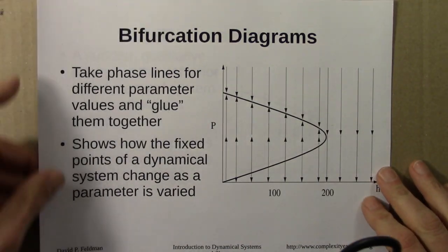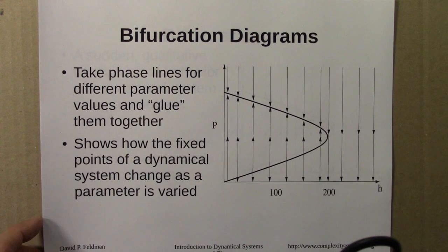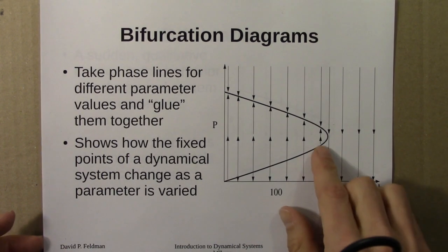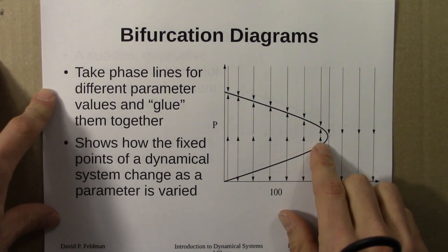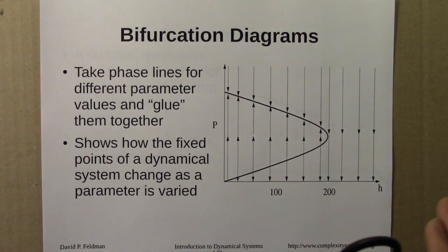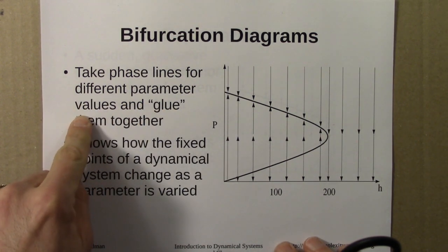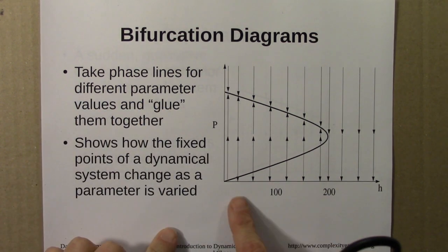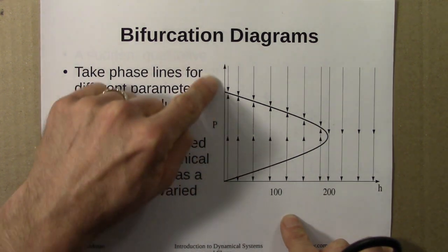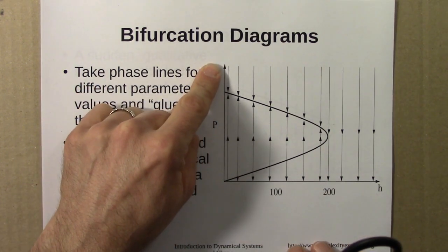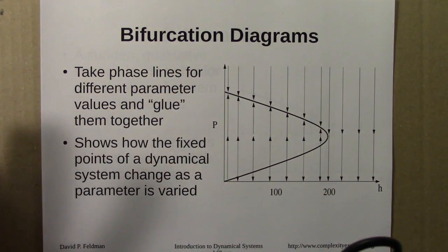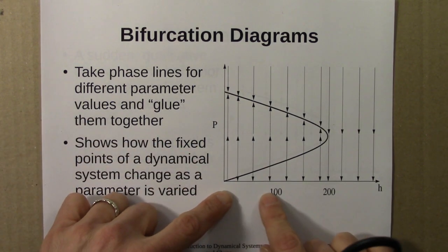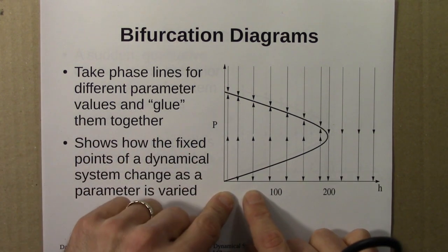Here's a bifurcation diagram that would have the general shape we'd expect for the logistic equation. We took the phase lines for different parameter values and glued them together. On the bifurcation diagram, the parameter changes along one axis and each vertical slice gives us a phase line. These are a bit abstract—it can take practice to get used to interpreting them.